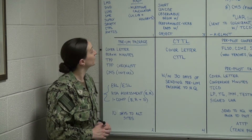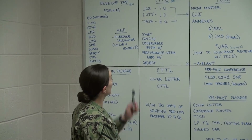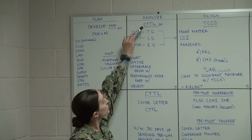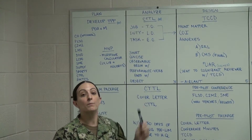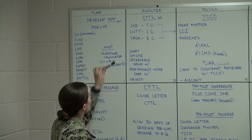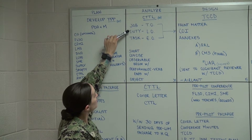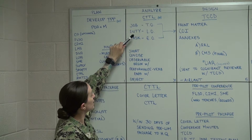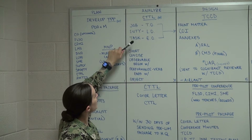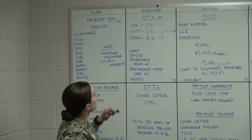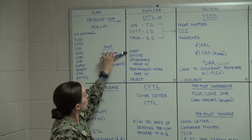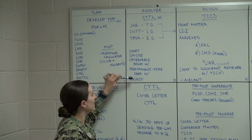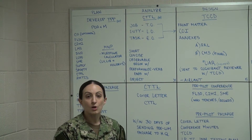From there we can move into our Analyze phase. In our Analyze phase we're going to have our Course Training Task List (CTTL) — this will be the building blocks for our course. It will consist of job, duty, and task: our job being our terminal objectives, duty being our learning objectives, and tasks being the enabling objectives. They need to be short, concise, observable, begin with a performance action verb, and then an object.